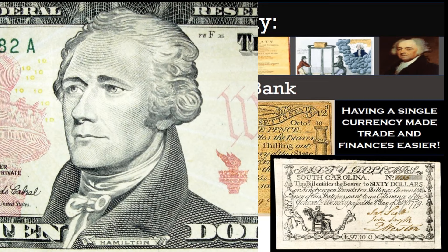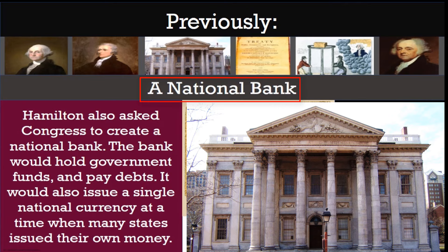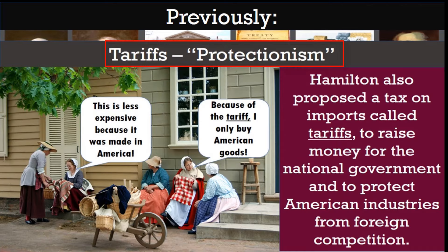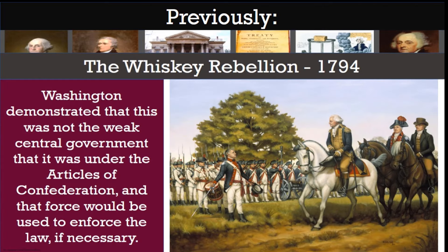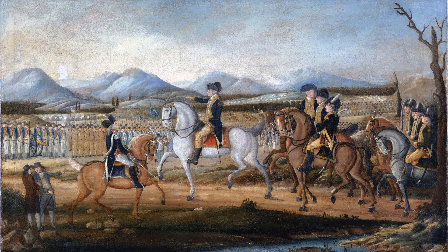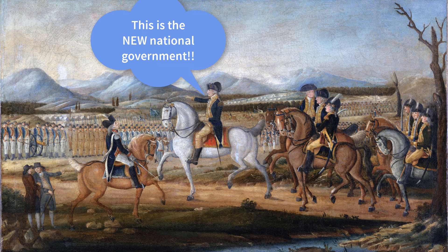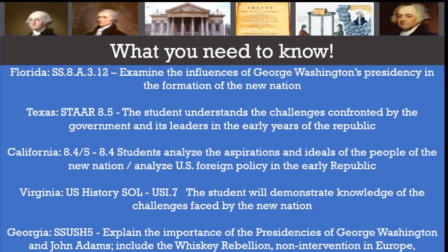Hamilton wanted to encourage a strong federal financial policy, creating the National Bank and enacting tariffs or taxes on imports, both of which Jefferson and his followers were worried favored manufacturers and traders over southern farmers. We also learned how President Washington put down the Whiskey Rebellion using the military to enforce the law, demonstrating a more powerful federal government than under the Articles of Confederation. Today we'll focus more on foreign policy and the rise of political factions.